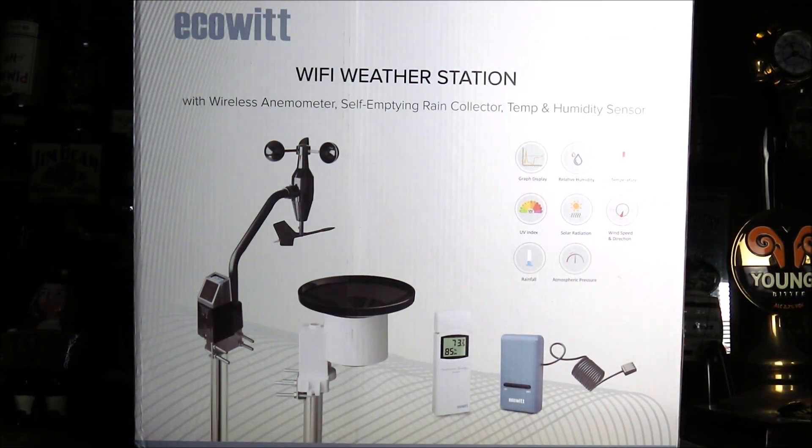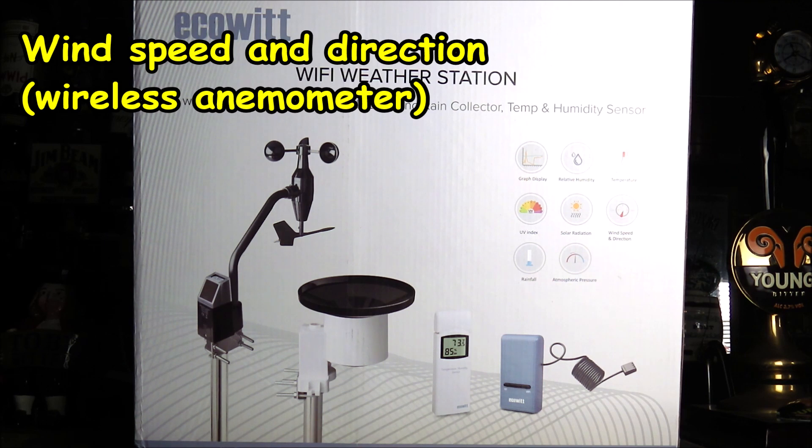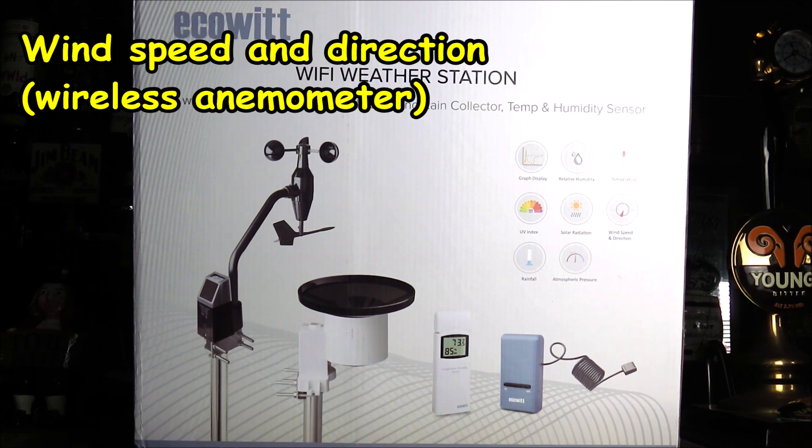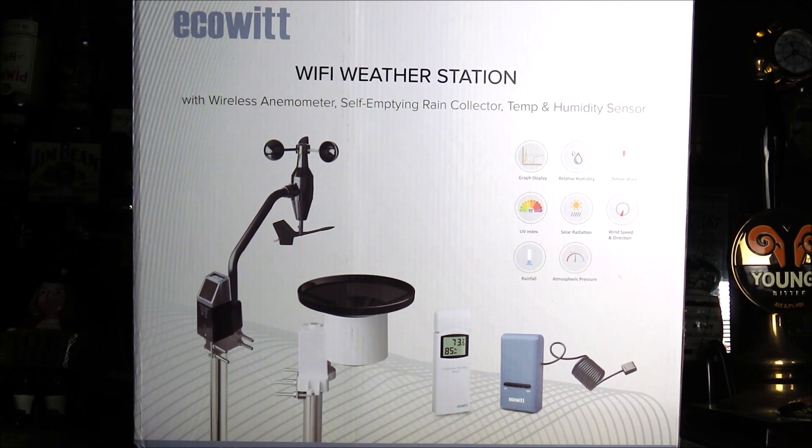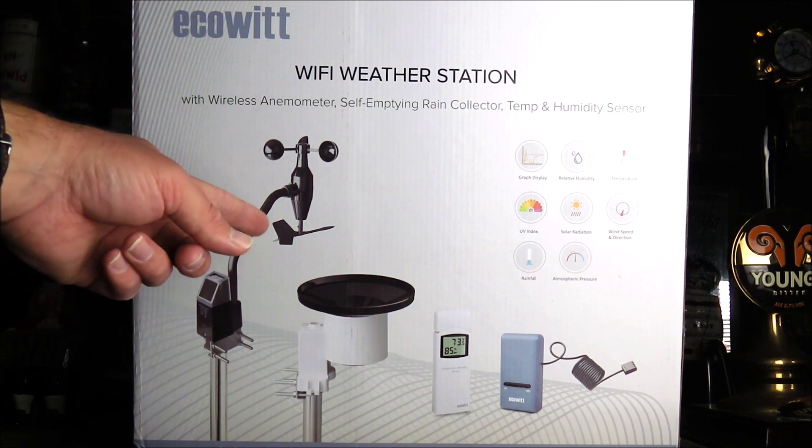So what can this weather station actually record? Firstly, we've got the wireless anemometer which is able to record the wind speed and direction with the rotating cups on top and the direction vane underneath.